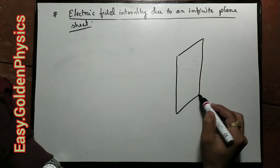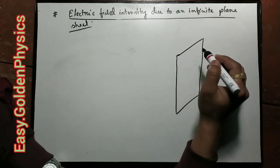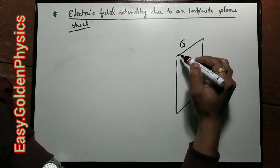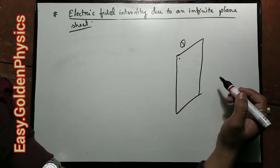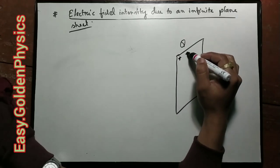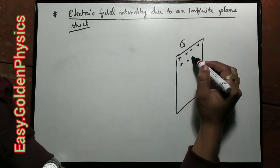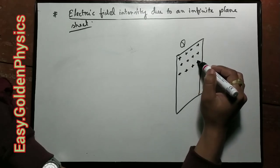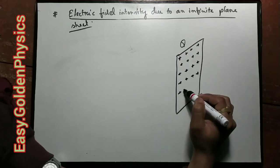This infinite plane sheet extends both up and down. This plane can be analyzed and has a very good idea, right?